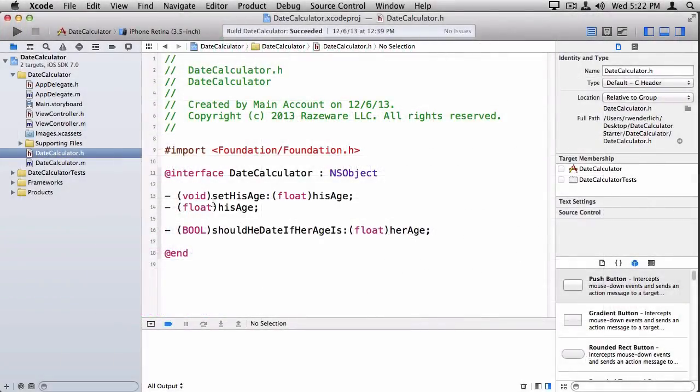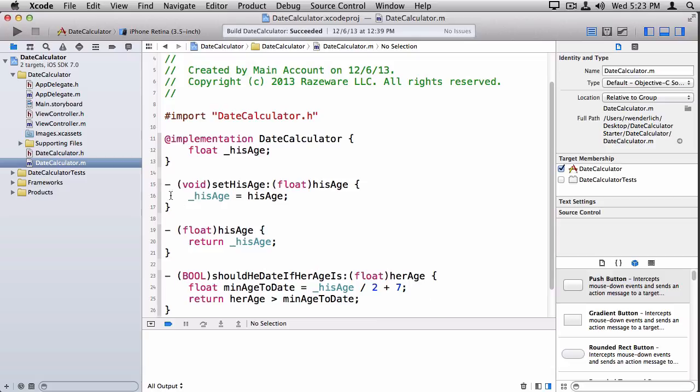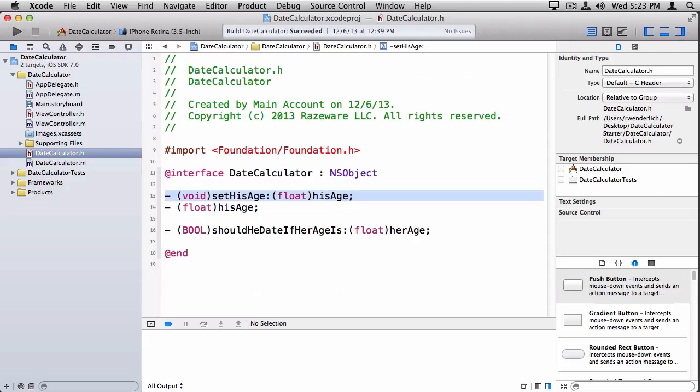Okay. So here's the date calculator class from the previous video. Now note that we created our getters and setters manually. Here's the setter, set his age, and here's the getter, his age. Over in the .m, we implemented those methods and we made a private instance variable. Well, all this work is exactly what properties do for you, so we can take all of that code and delete it.